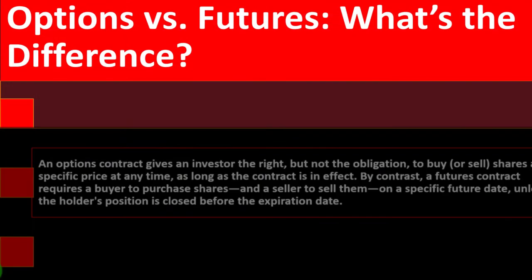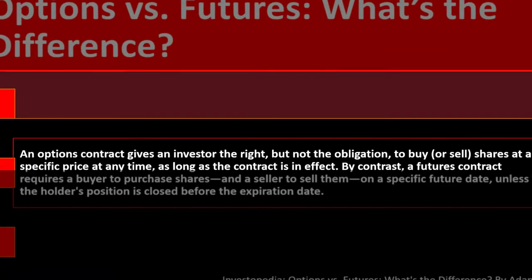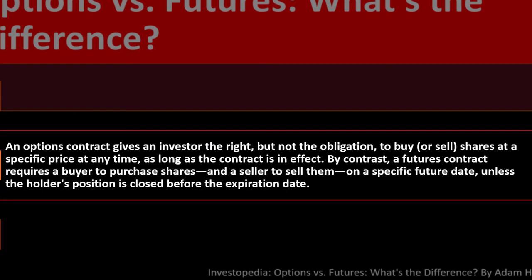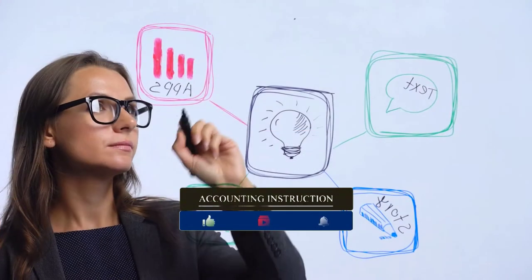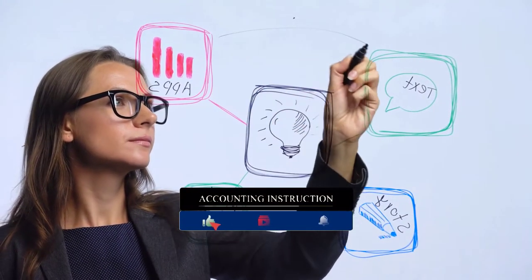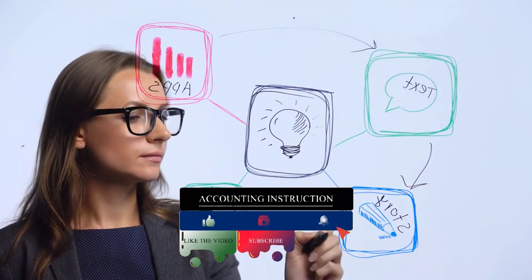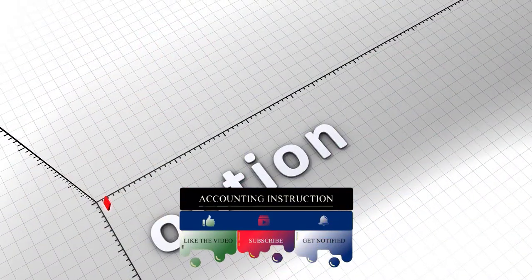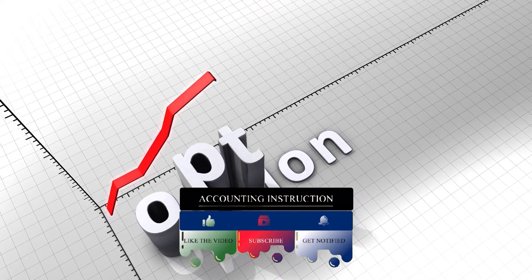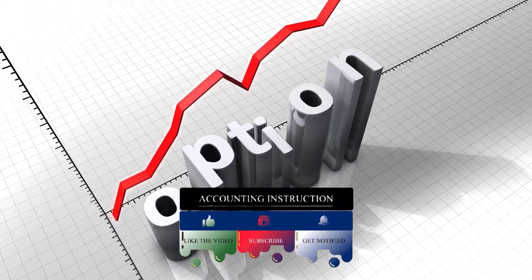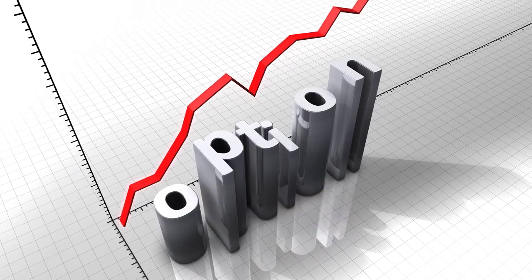An options contract gives an investor the right but not the obligation to buy or sell shares at a specific price at any time as long as the contract is in effect. There is value in the option, but it's complex to think about because it's the value of the capacity to take action — you don't have to actually make the trade.